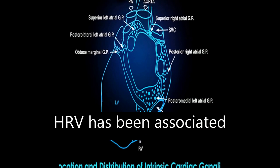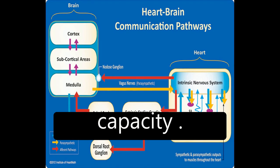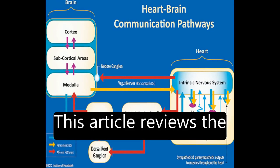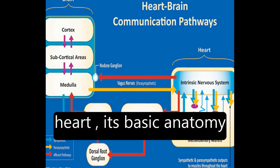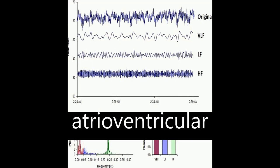HRV has been associated with disease risk and mortality, as well as loss of regulatory capacity. This article reviews the neural regulation of the heart, its basic anatomy, and the sinoatrial and atrioventricular pacemakers.